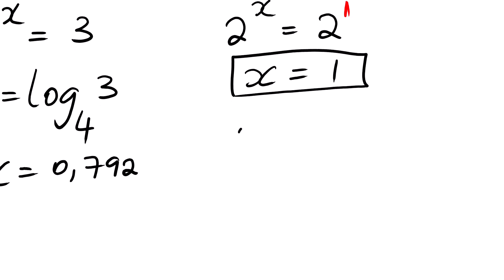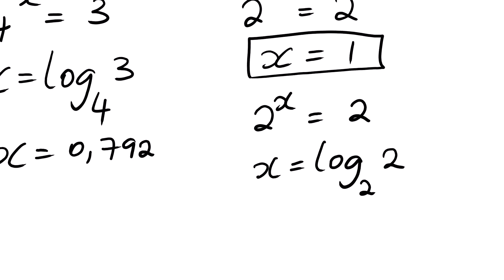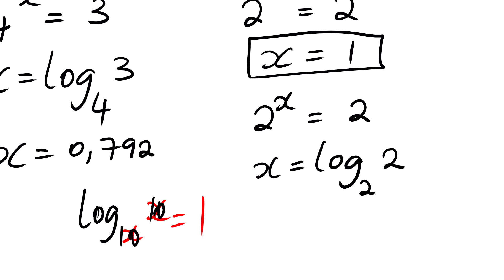Now using logs: 2 to the power x equals 2. We know that x equals log base 2 of 2. You must know that whenever the base is the same as the argument, this will always equal 1. It doesn't matter whether you have log base 10 of 10 — the answer is 1. Log base 20 of 20 — the answer is 1. So in this case, log base 2 of 2 equals 1.